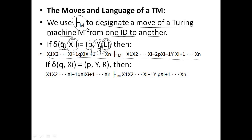If instead delta(Q, Xi) = (P, Y, R) — moving to the right — the configuration becomes X1...Xi-1, Y, P, Xi+1...XN. Observe that P now appears after Y, indicating a right move. There are three possibilities: moving left (L), moving right (R), or halt (H). When moving right, Y replaces Xi and P is placed after Y, with Xi+1 following.